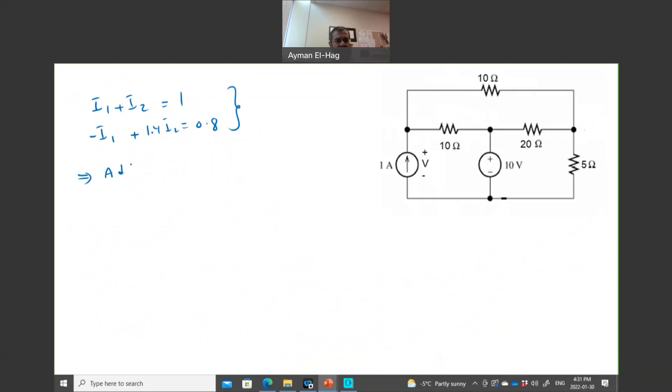So now I have two equations with two unknowns. I can multiply the first equation by 1.4 and then subtract, or I can just add the two equations. So let's add these two equations together to eliminate I1. We'll have here 2.4I2 is equal to 1.8. So your I2 is equal to 1.8 divided by 2.4, which is equal to 0.75. This is your I2. I can find from here I1, which is equal to 1 minus 0.75, which is equal to 0.25 amps. This is my I1.